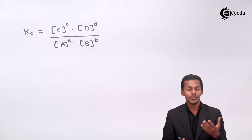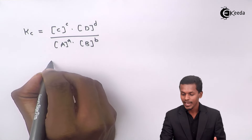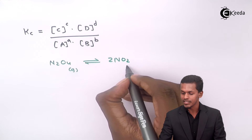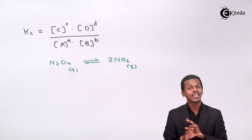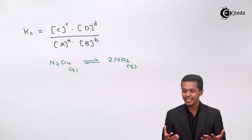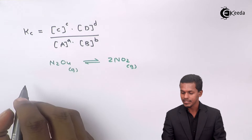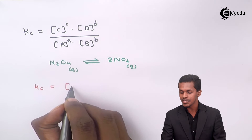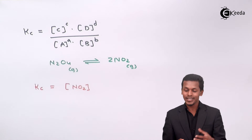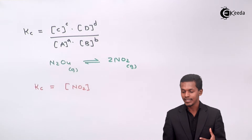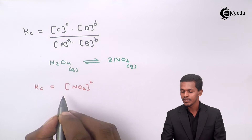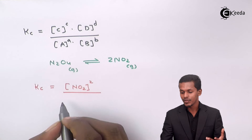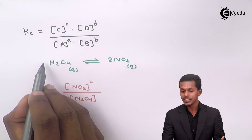The reaction given to us is N2O4 (g) in equilibrium giving two moles of NO2. To evaluate Kc, the product is NO2 with stoichiometry of two, so we write concentration of NO2 raised to two in the numerator. The reactant is N2O4 with stoichiometry of one, so we write concentration of N2O4 raised to one in the denominator.